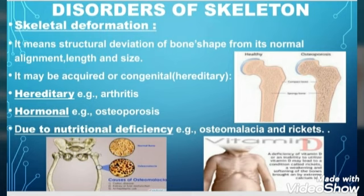The example of hereditary skeletal deformation is arthritis, while acquired skeletal deformation may be of different types. First is hormonal, and the example of hormonal skeletal deformation is osteoporosis. Second is due to nutritional deficiency, and the example of this type is osteomalacia. Both are bone diseases in which bones become weak.